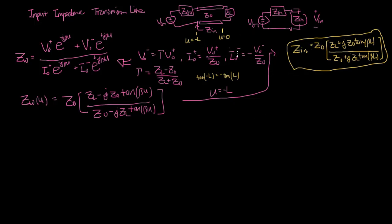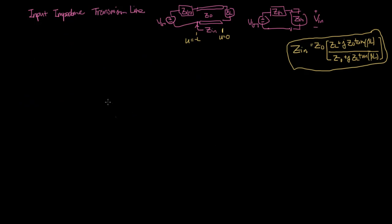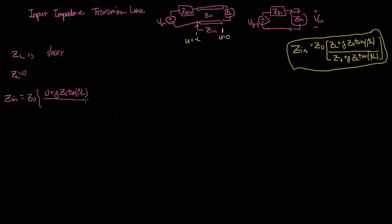Let's look at specific scenarios: short circuit, open circuit, quarter wavelength, and half wavelength. Starting with a short circuit load, Z_L = 0. Plugging into the Z_in expression: Z_in = Z_0 · [0 + jZ_0 tan(βL)] / [Z_0 + 0], the Z_0's cancel and we're left with Z_in = jZ_0 tan(βL).